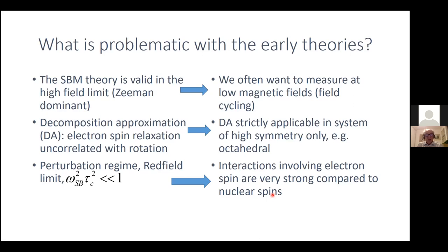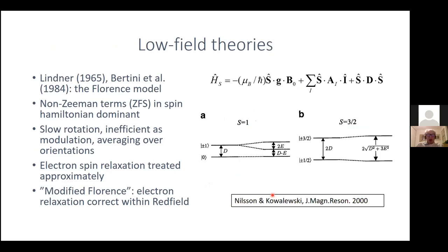Parts of this are quite straightforward and not too difficult to address. There is a class of theories for relaxation in paramagnetic systems known as low-field theories. The idea comes from Lindner but was not very much used — she formulated it already in the mid-1960s. In the mid-1980s, the group in Florence with Ivano Bertini took up this model and presented a nice extension of it, which turned out to be very useful.